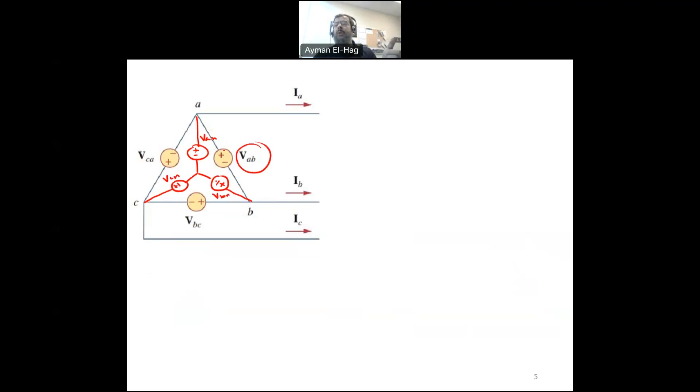Now, we know VAB, but we don't know VAN. But we already know the relationship between the line voltages and the phase voltages. We know that your VAB is equal to root 3 VAN and plus 30 degrees. This is the formula that I just started my video with.